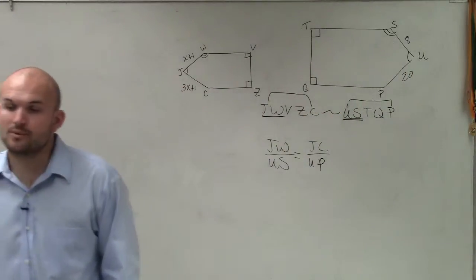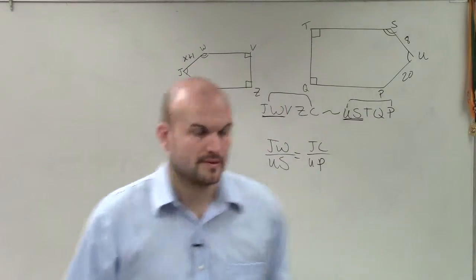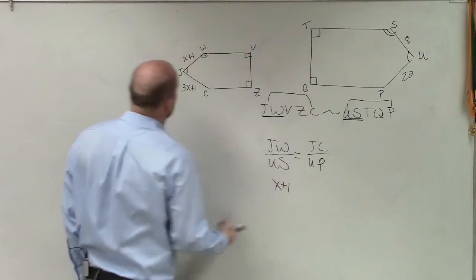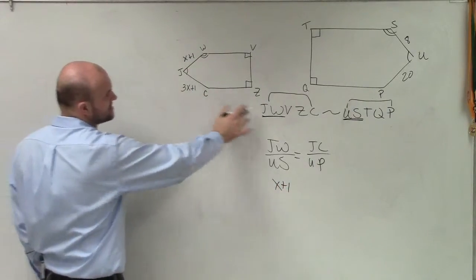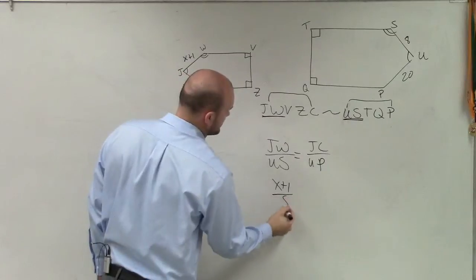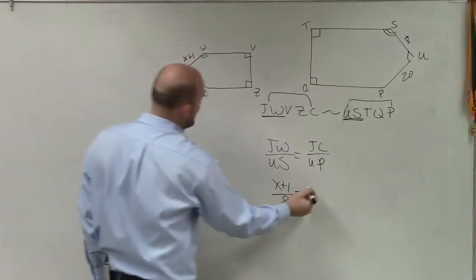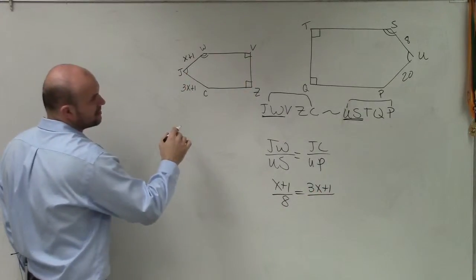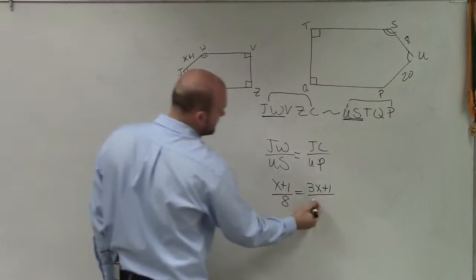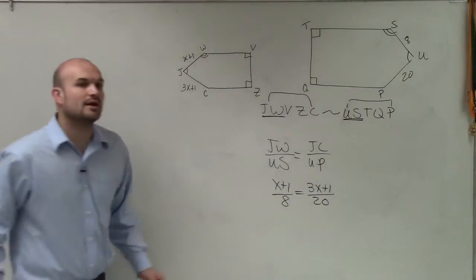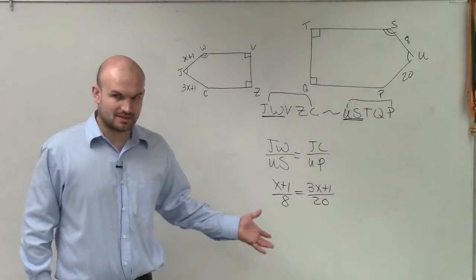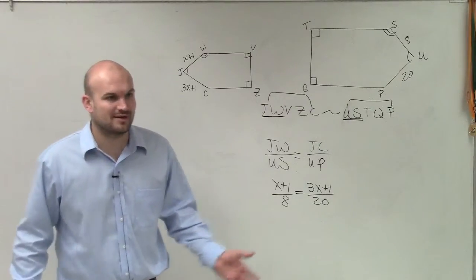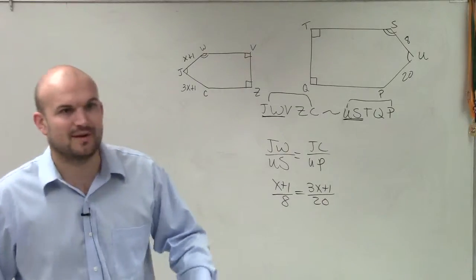Now, ladies and gentlemen, what I want to do is now let's plug in what we know. So we know that JW is X plus 1. We know that US is 8, which is equal to JC, which is 3X plus 1, and UP is 20. What I'm doing, you do need to understand, or you're not going to be able to understand how to take a test or do the homework or anything else on your own. Then you're just a robot doing exactly what I need you to do, and then you're just not going to be able to pass anything else.